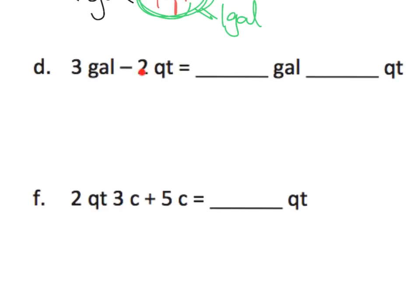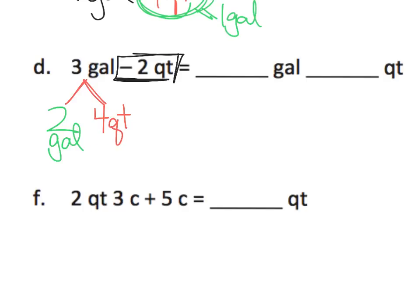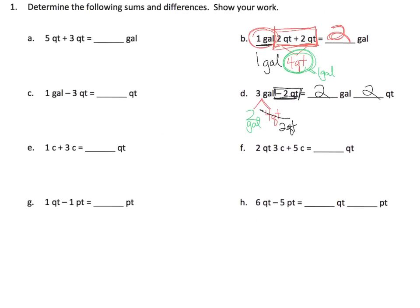We've got three gallons and we're supposed to take away two quarts, but we have no quarts over here. So what we're going to do is take one of those gallons and turn it into four quarts, and then we have two gallons. So instead of calling it three gallons, we change it to two gallons plus four quarts. Now we can take away two quarts, and we're going to be left with two quarts. So we end up with two gallons and two quarts.